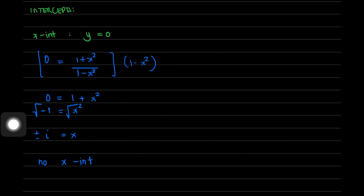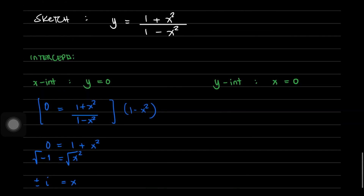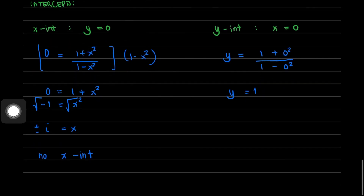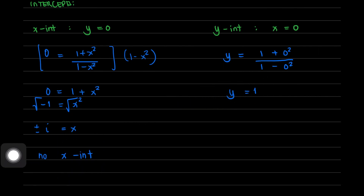Solving for the y-intercept, we set x equal to 0, giving us y = (1 + 0²)/(1 - 0²), which simplifies to y = 1. So the graph passes through y equals 1. We have a y-intercept but no x-intercept.